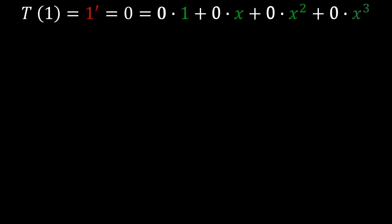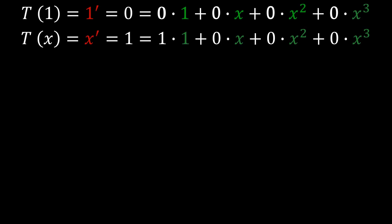T(1) is the derivative of 1, which is 0. And 0 can be written as 0·1 + 0·x + 0·x² + 0·x³. T(x) is the derivative of x, which is 1. And 1 can be written as 1·1 + 0·x + 0·x² + 0·x³.